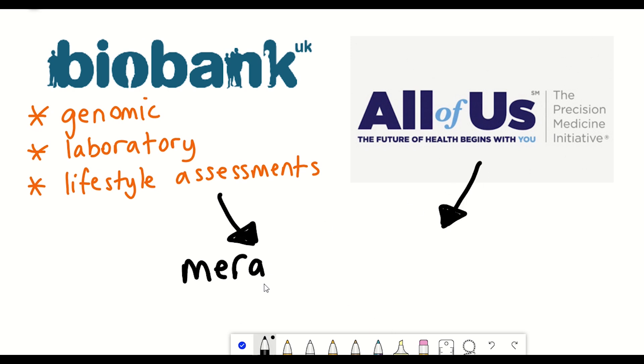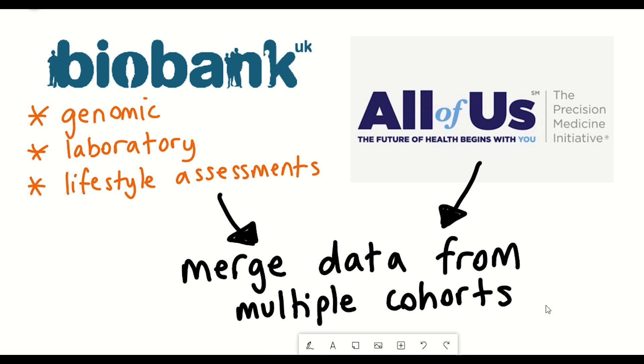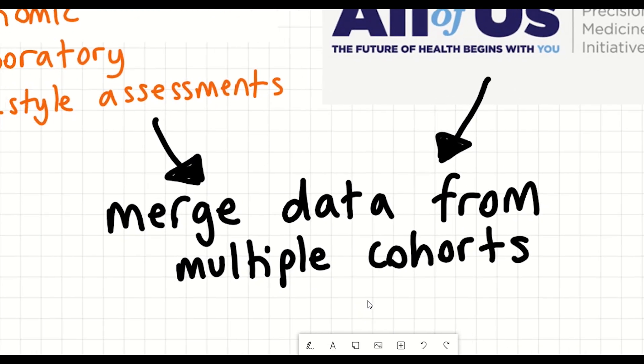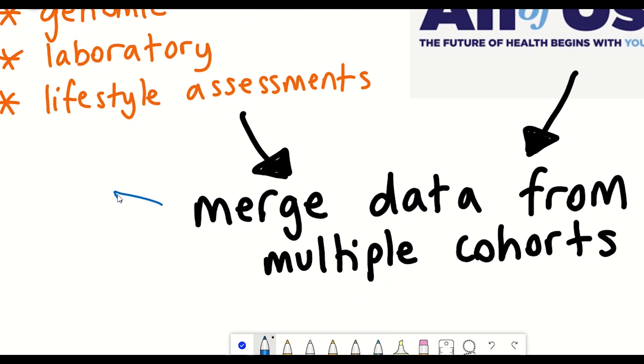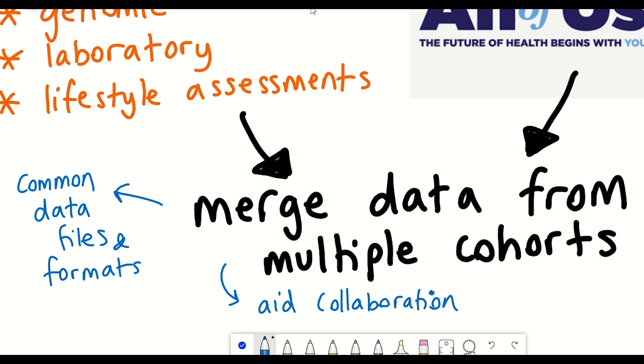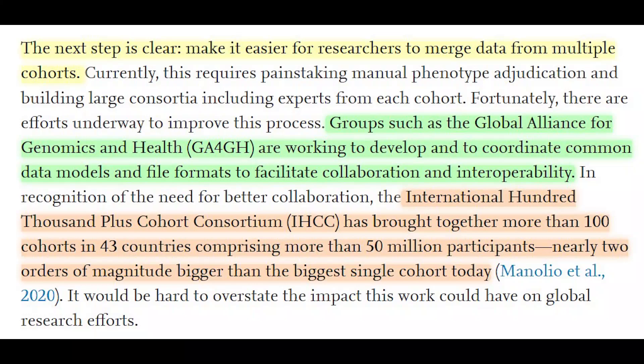But to make this data more accessible, what's really needed are ways in which all of the information from these different cohorts can be merged together to make it easier for different researchers to access. And so this would involve the development of common data models and file formats to facilitate collaboration and interoperability. But the good news is that efforts are already being undertaken to improve this process, such as work conducted by the Global Alliance for Genomics and Health.